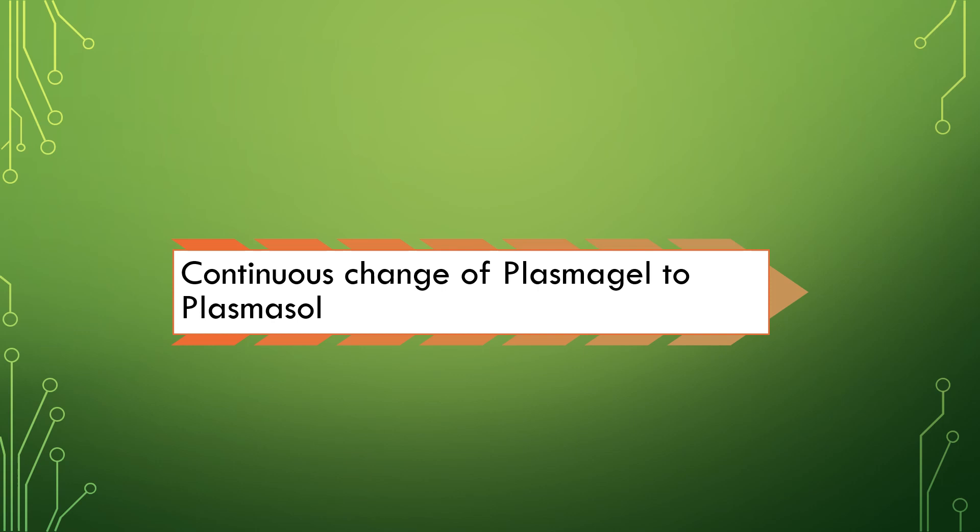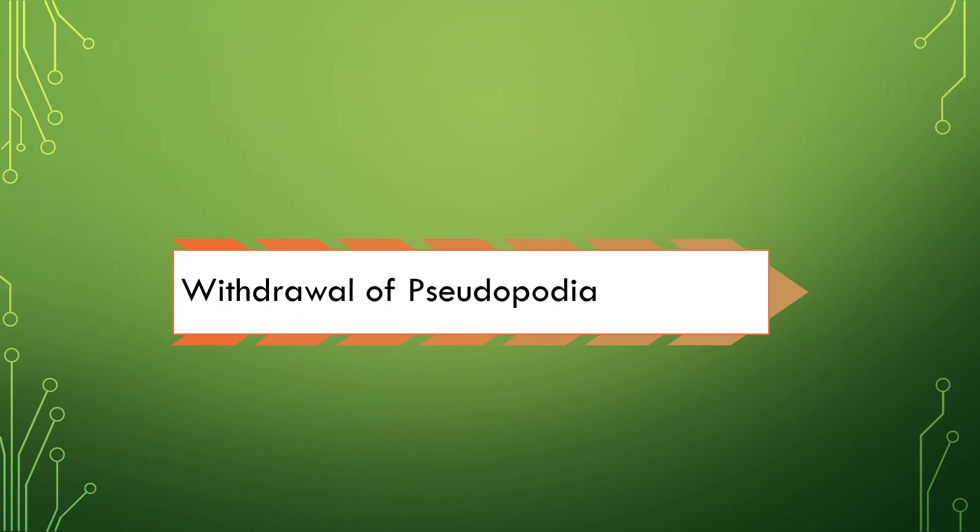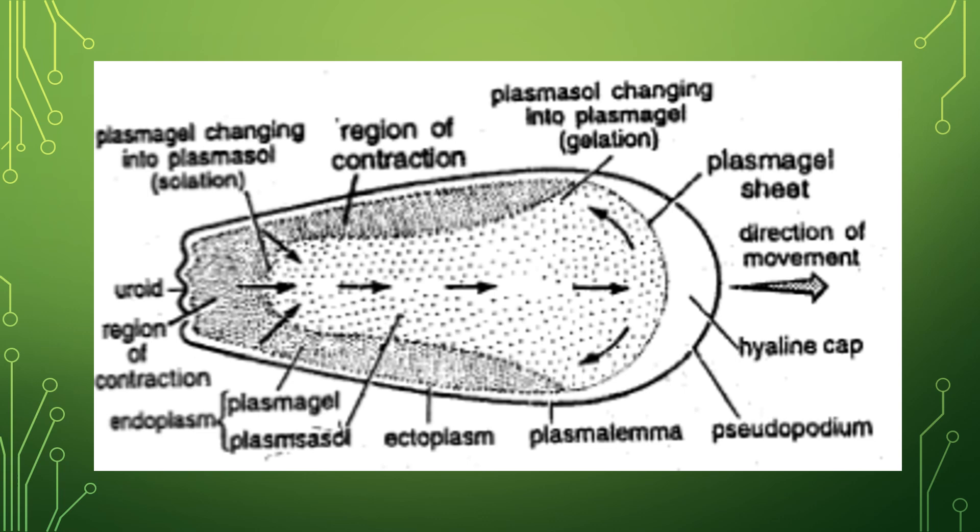This results in the withdrawal of pseudopodium from the posterior end and helps the continuous supply of plasmasol to the developing pseudopodium at the anterior end. By producing pseudopodia continuously in one direction, amoeba slowly moves. Refer this diagram for better understanding.